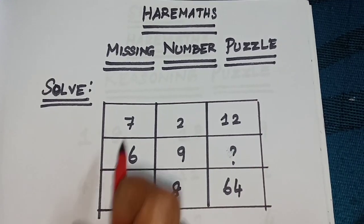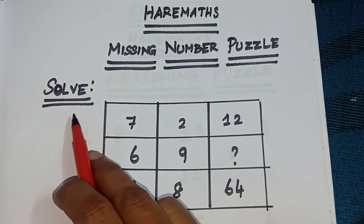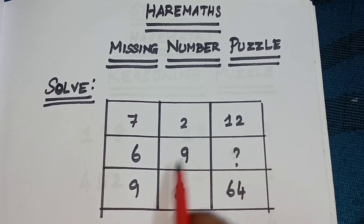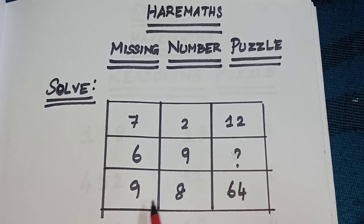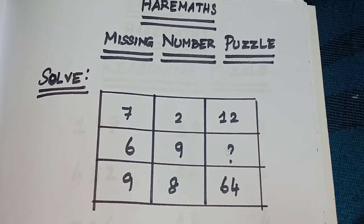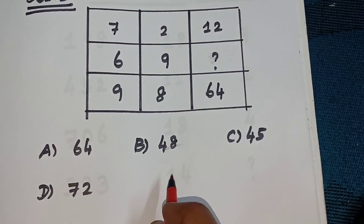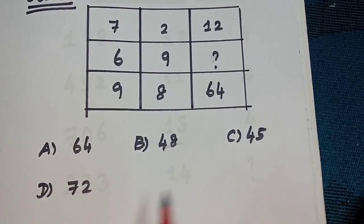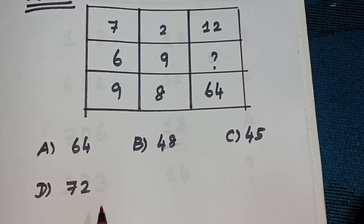Hello friends, welcome to HariMaths channel. Today's topic is missing number puzzle. Solve: 7, 2, 12; 6, 9, question mark; 9, 8, 64. The options are: option A, 64; option B, 48; option C, 45; and option D, 72. Solution: